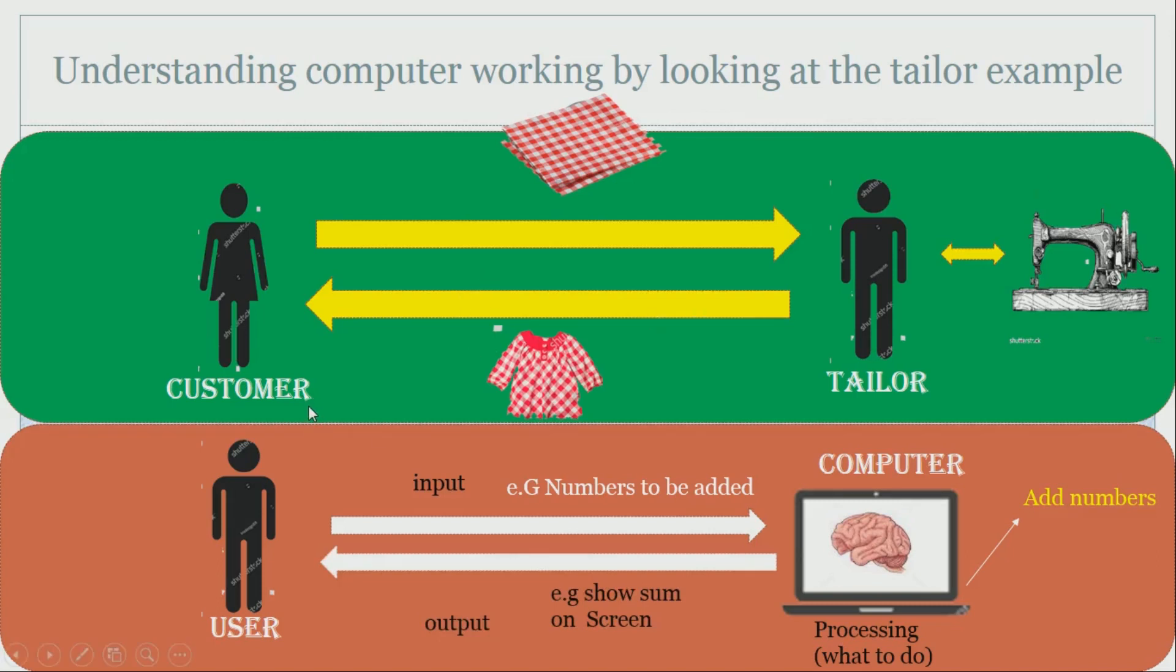Just like the customer provides unstitched clothes, the computer user also provides or enters data to be added. The tailor stitches clothes using the sewing machine. The computer also adds numbers and calculates the sum using the system unit. Once done, just like tailor provides the clothes back to the customer, in the same way, the computer provides the output to the user, which is actually the sum of the numbers. Computer works in this way, getting input and then processing it and then producing output to the user.